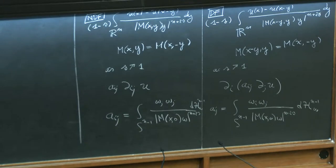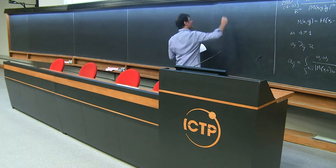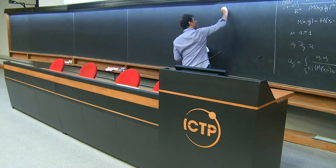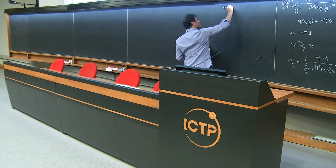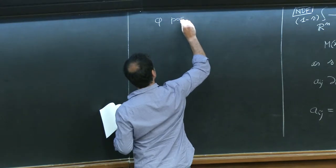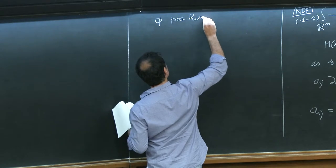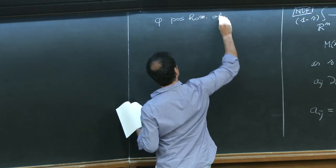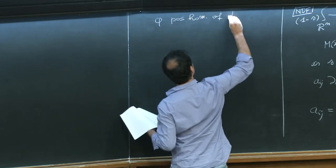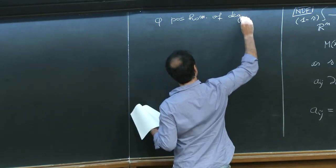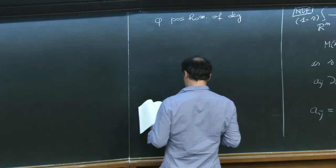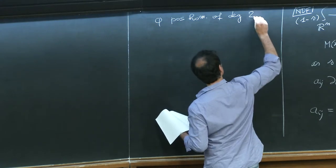A possible strategy to pass to the limit of the equation directly is, first of all, to notice something useful in itself: if you have a function phi which is positively homogeneous of degree 2 plus alpha, you can compute expressions involving it explicitly just by homogeneity.